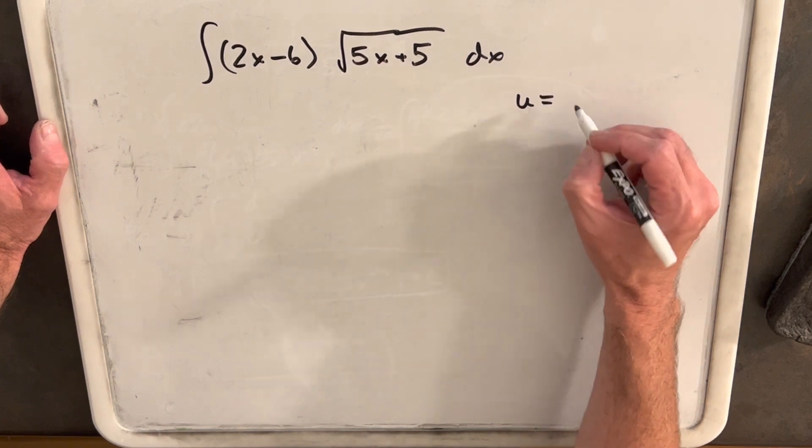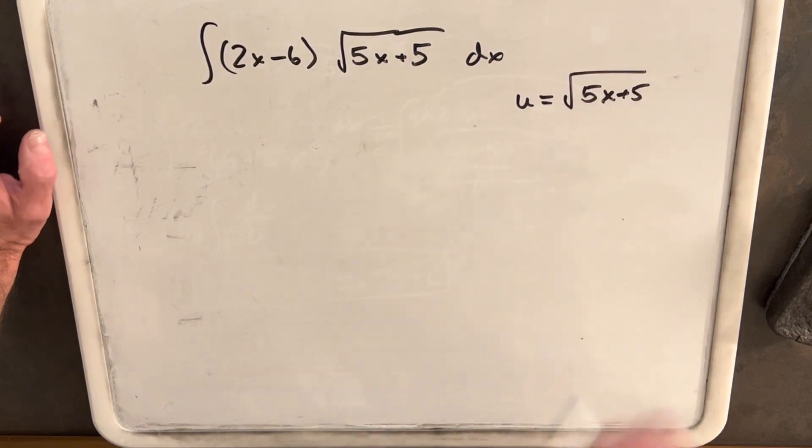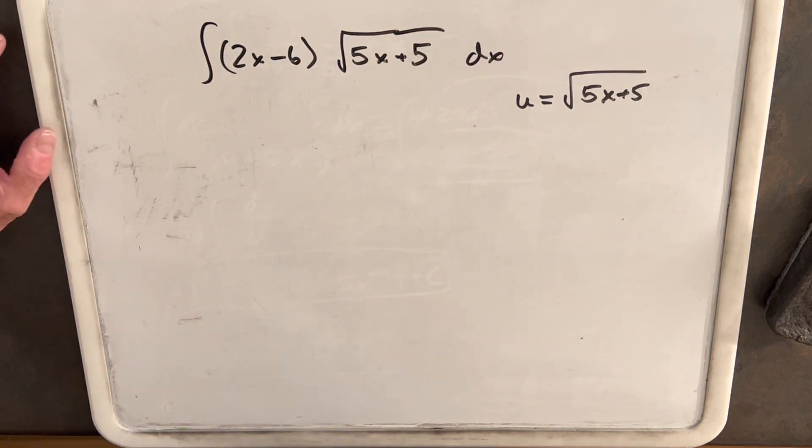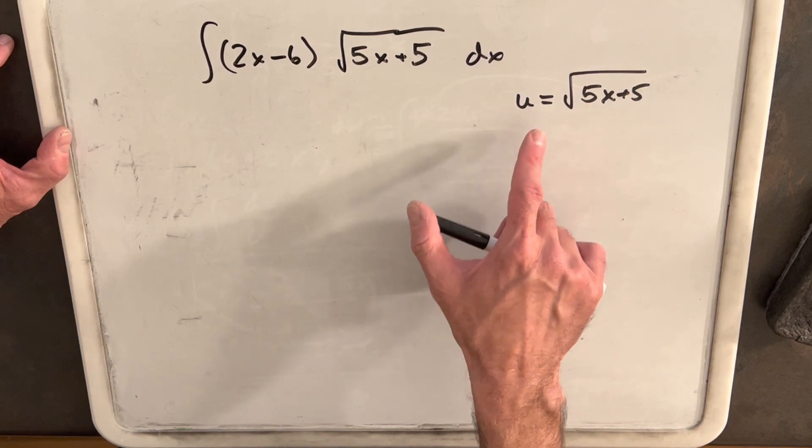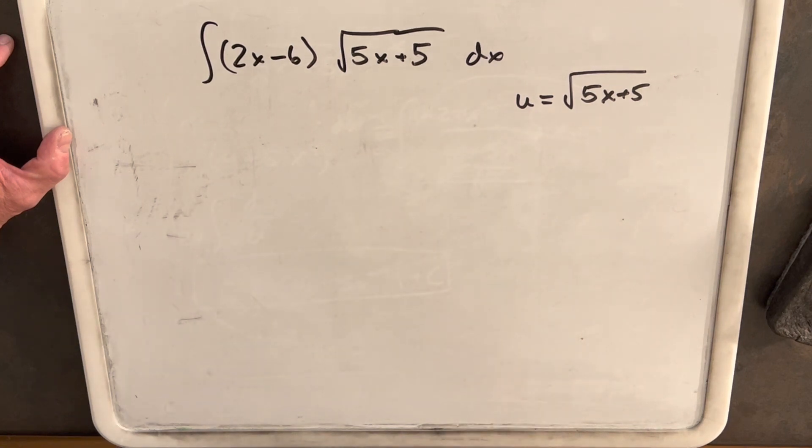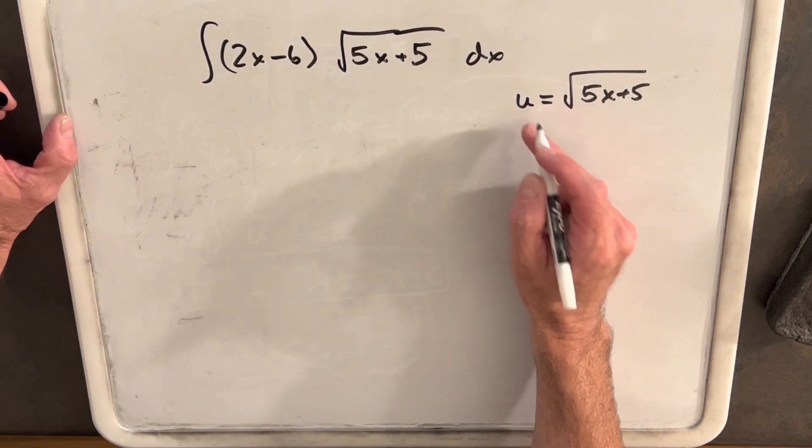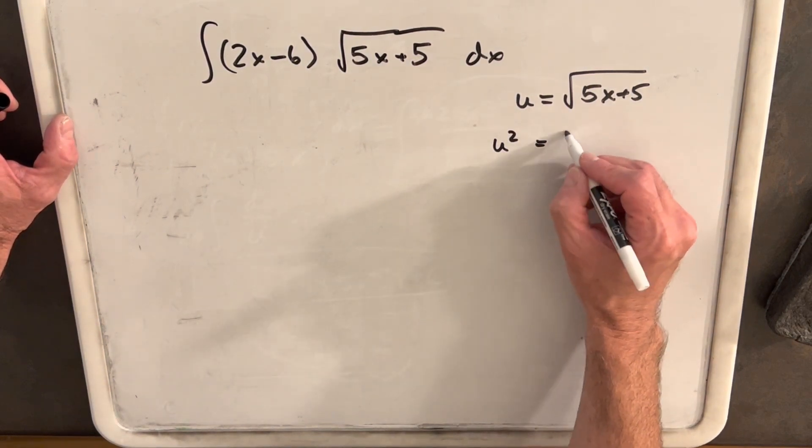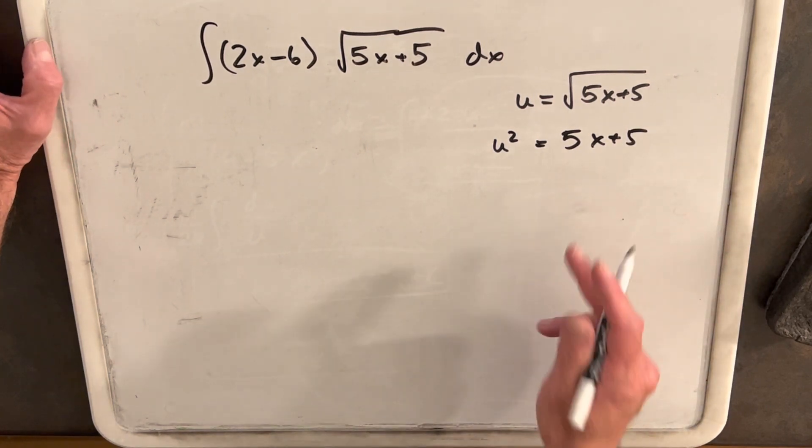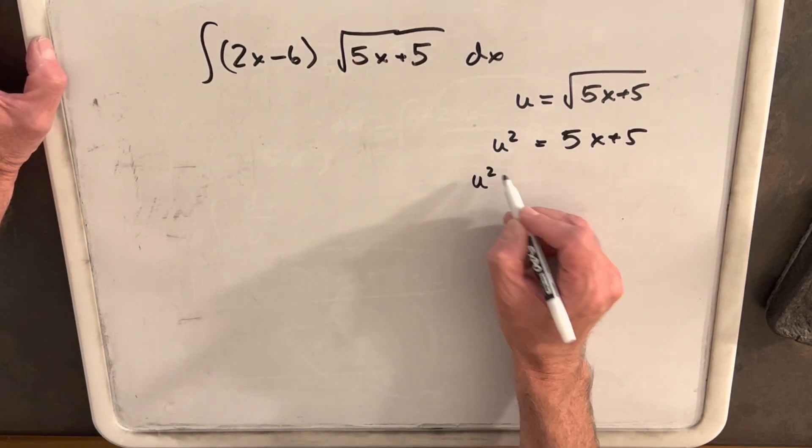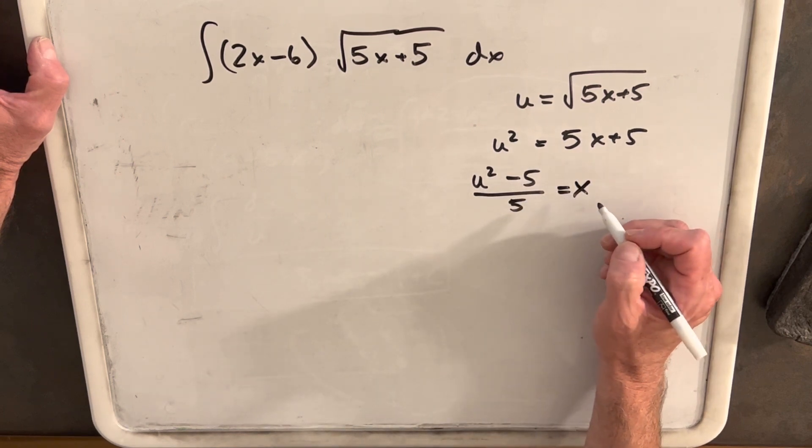So let's say u equals square root of 5x plus 5. But then here we're going to want a value for x. So we've made a substitution for u, but we'd like to get a value for x in terms of u. So let's find that. So we'll square u, and we'll have u squared equals 5x plus 5. But then just solving for x, we're going to have u squared minus 5 over 5 equals x.